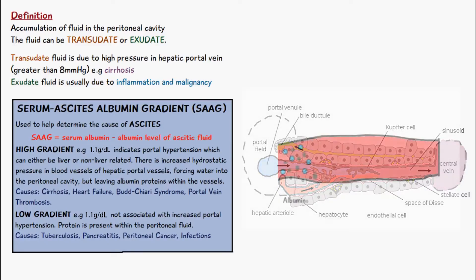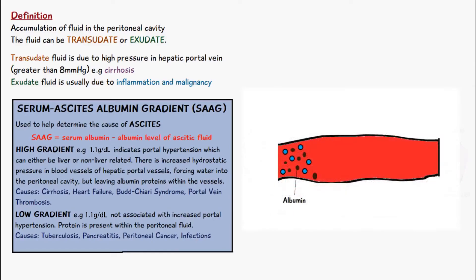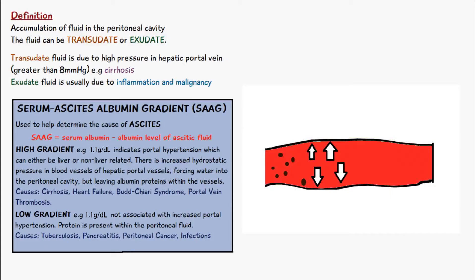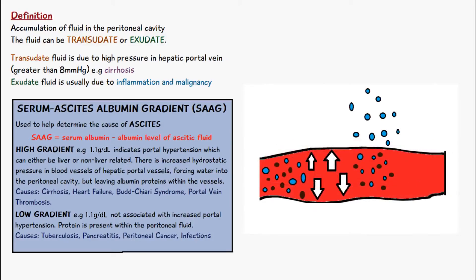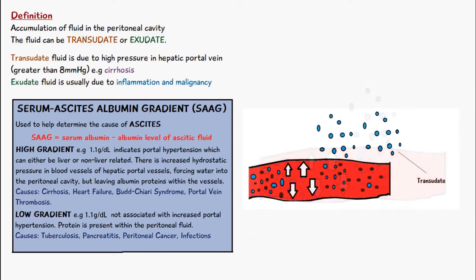The way that this occurs is we have an increase in hydrostatic pressure in the blood vessels of the hepatic portal veins, and this forces the water into the peritoneal cavity, but it leaves the albumin proteins within the vessel. So the albumin level of the ascitic fluid will be low.